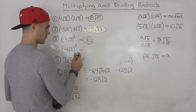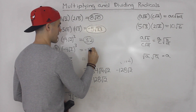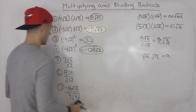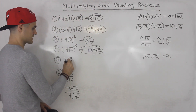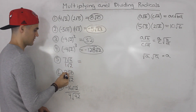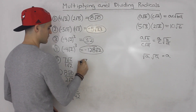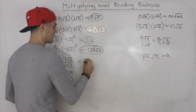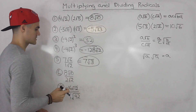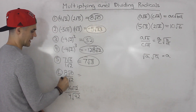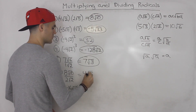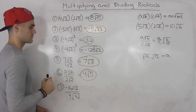So -4√2 to the power of 3 is -128√2. Moving on: we have 7√6 over √2. If there's a radical by itself, there's a 1 in front. So 7 divided by 1 gives us 7, and √6 divided by √2 gives us √3. That is the final answer — we can't simplify further. Same thing with the next one: 8 divided by 2 is 4, and √10 divided by √2 gives us √5. Can't simplify √5 any further.